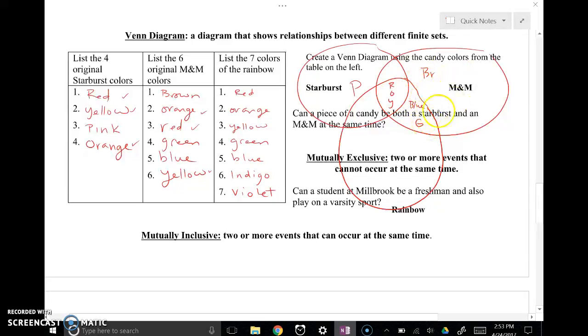It looks like we have 1, 2, 3, 4, 5, 6 colors for M&Ms already listed. So now I'm just going through and writing down the rest of the rainbow colors that have not been listed. Red, orange, yellow, blue, and green. Red, orange, yellow, green, and blue. So it's just this indigo and violet.